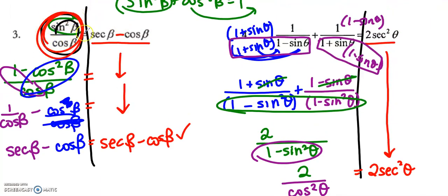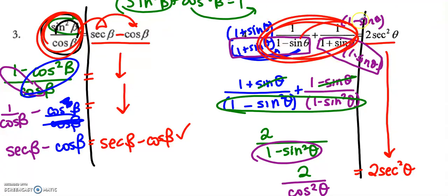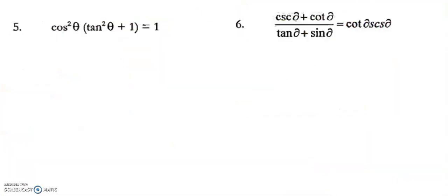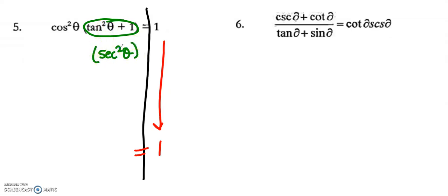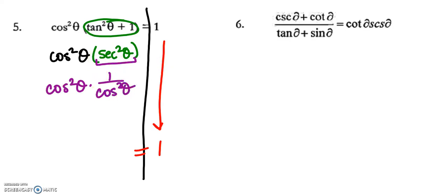Moving on: cosine squared times (tangent squared plus one) equals one. Hopefully you can tell the left side is more complicated. Using Pythagorean identities, tangent squared plus one looks familiar — it can be substituted with secant squared theta. Then I still have cosine squared theta. Using reciprocal identities, secant squared is one over cosine squared, so cosine squared theta times one over cosine squared theta — the cosine squareds cancel, and I'm left with one. Another way would be to distribute cosine squared first, but using the Pythagorean identity right away gets you there cleanly.